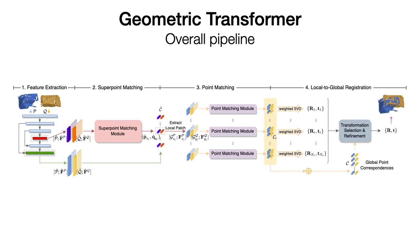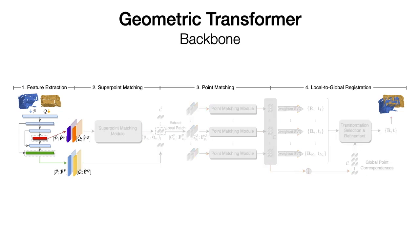Our method consists of four stages. First, we use a multi-level KP-conv backbone to downsample the point clouds and extract point features. The points at the coarsest level are used as the superpoints, and the points at the second level are used for point matching.